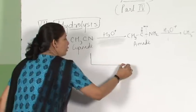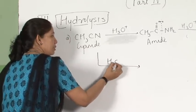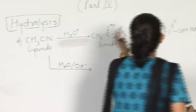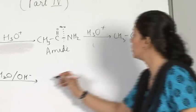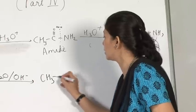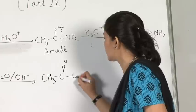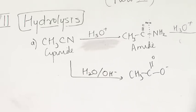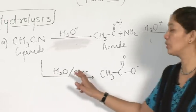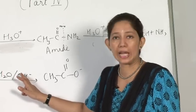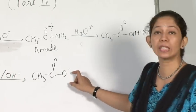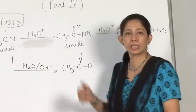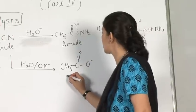The same cyanide when it undergoes basic hydrolysis will also give an amide, and after that rather than giving a carboxylic acid, it gives a salt of carboxylic acid. You should be very careful: if the base is specified as any OH, write the cation accordingly — for KOH, write K. This gives the carboxylate ion.